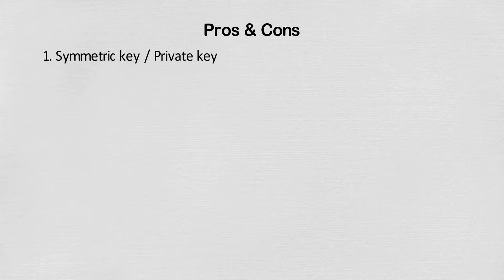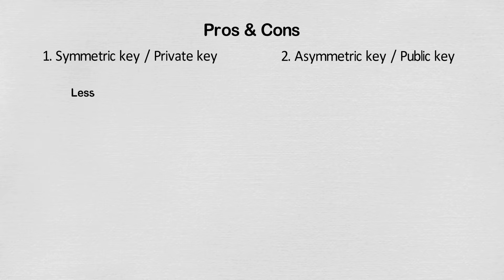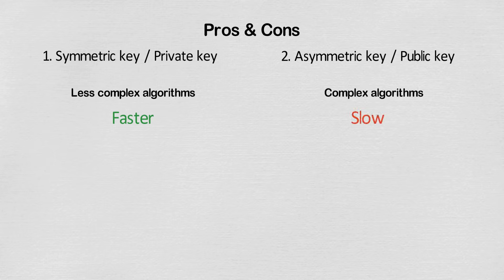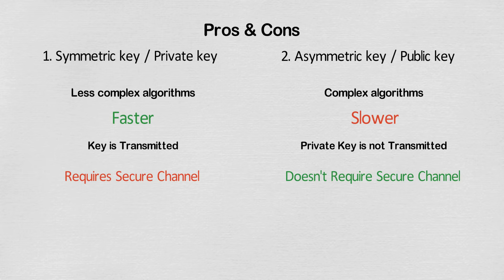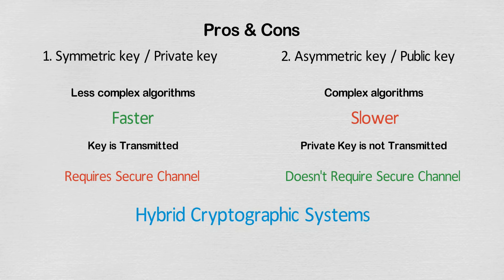There are pros and cons of both symmetric and asymmetric key cryptography. Symmetric key cryptography uses less complex algorithms and is faster, making it better suited for larger volumes of data. In public key cryptography, the private key is never transmitted, so it does not require a secure channel. Most practical systems use a combination of both — called hybrid cryptographic systems — to get the best of each method.